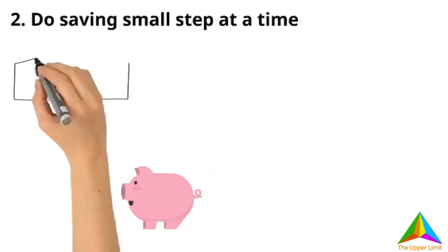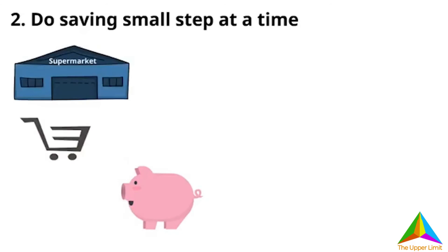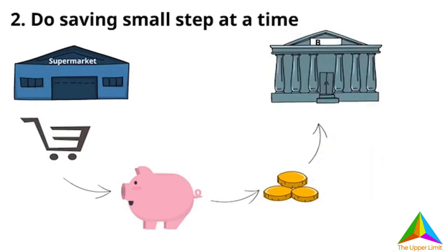One way of doing so is to put the change in a piggy bank after buying groceries. This method of keeping the change quickly adds up to a few dollars that can soon be used to open a bank account and transfer your savings. In this way, you are not only saving, but earning a bit of interest on your money.